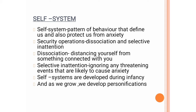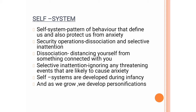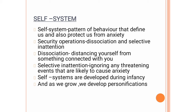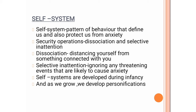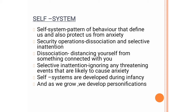Interpersonal experiences that go against our self-system tend to trigger a response called security operations — a very important concept. These are built-in mechanisms to protect us from anxiety. Security operations include dissociation and selective inattention. When interpersonal experiences go against our self-system, these two types of security operations are triggered. Dissociation is when you distance yourself or fail to acknowledge something connected to your personality; it is an unconscious response. Selective inattention is ignoring any threatening events that are likely to cause anxiety — you close your eyes and ignore whatever is possibly going to generate anxiety in you.